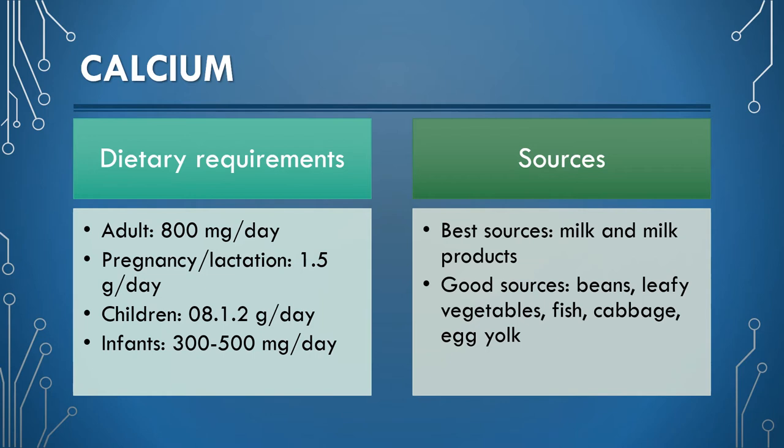In pregnant and lactating women, the requirement is near about 1.5 g per day. In children, it is required near about 0.8 to 1.2 g per day, and in infants less than one year, it is required 300 to 500 mg per day.